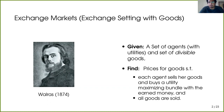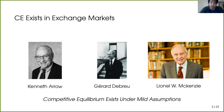As defined, it is not immediately clear that such prices always exist regardless of the number of agents, goods, or utility functions. Here I would like to mention one of the most seminal results in mathematical economics, due to Arrow, Debreu, and independently Lionel McKenzie, who proved the existence of competitive equilibrium under certain mild assumptions. Just to note that such prices and allocations do exist in a very generic setting.